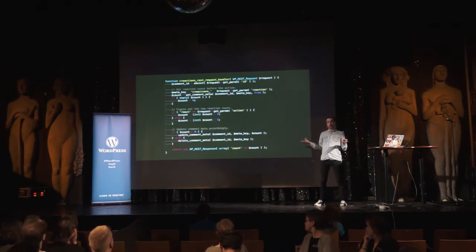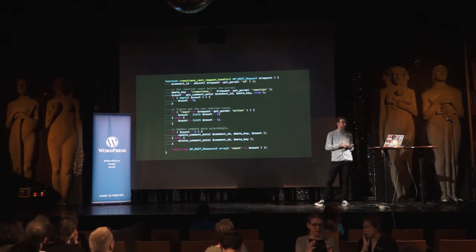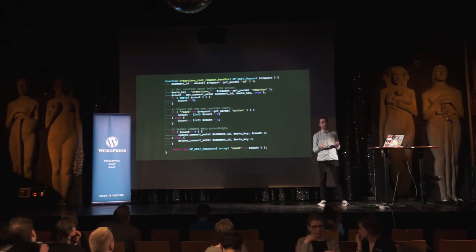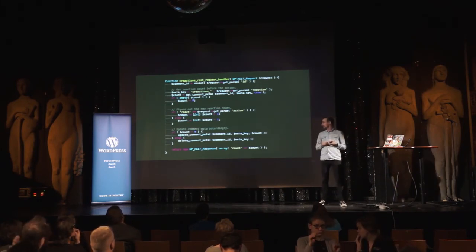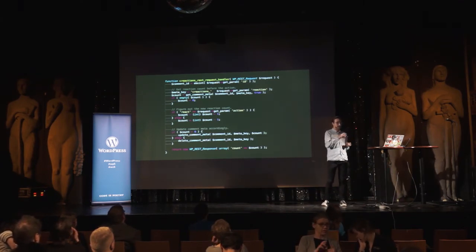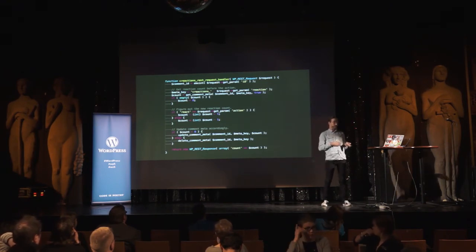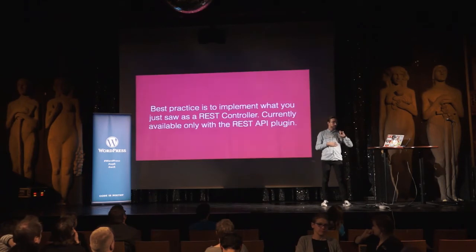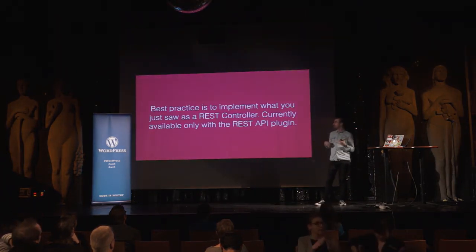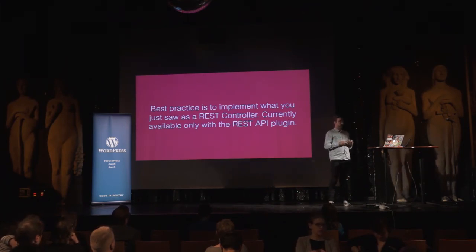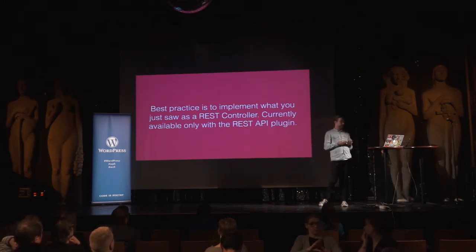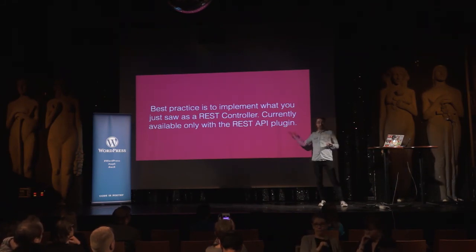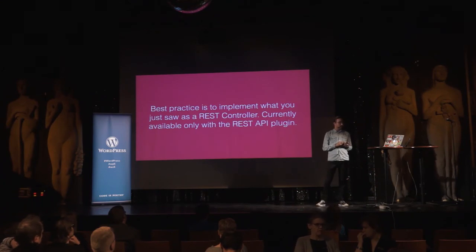The actual handler code is now way simpler, because we don't have to care about whether the data passed to it is valid — we know it's valid. We can just do our business, and on the last line simply return the REST response object with the data we want to pass back to JavaScript. The best practice is to implement all this in a more object-oriented way, by inheriting from the REST controller object, but that's not available if you don't have the REST API plugin installed. All the same concepts apply — it just has more infrastructure around it, like authentication and permission handling.